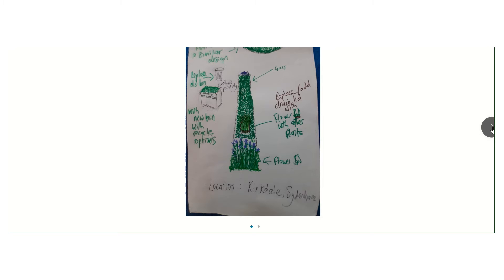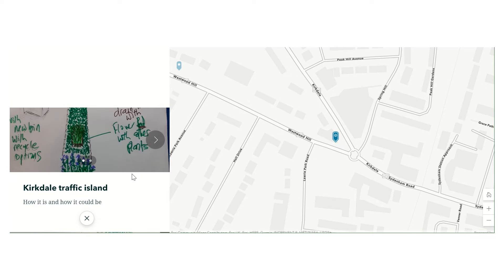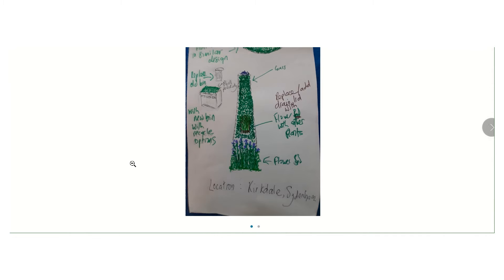The sketch map that the student has produced is this map here, where the traffic island is covered in grass and there are flower beds. The little drain was replaced with a pot, and we have ideas about replacing the local bin with a recycling bin which could potentially have some green planting on the top.